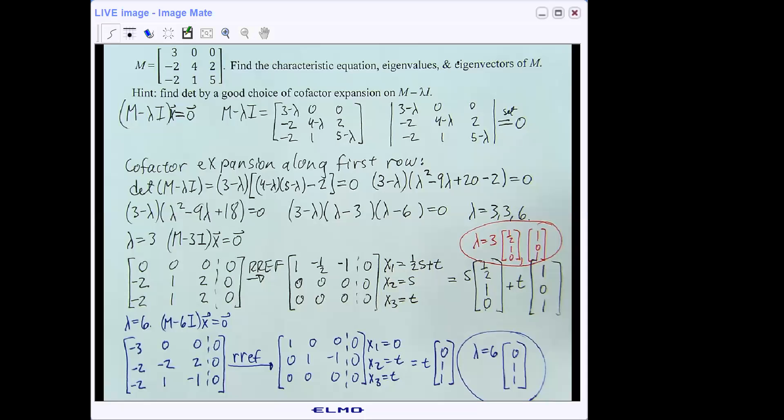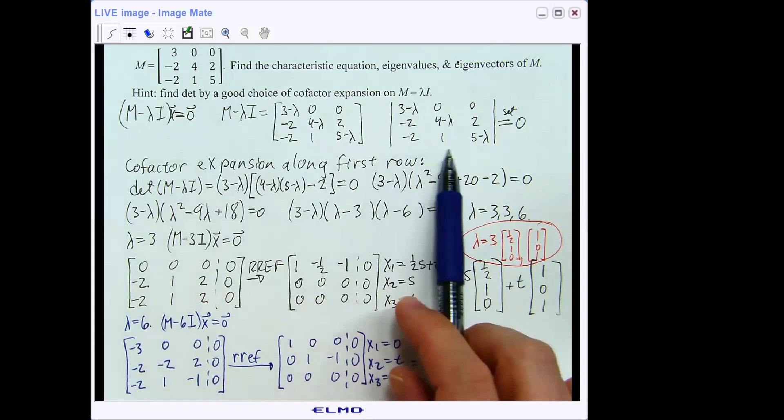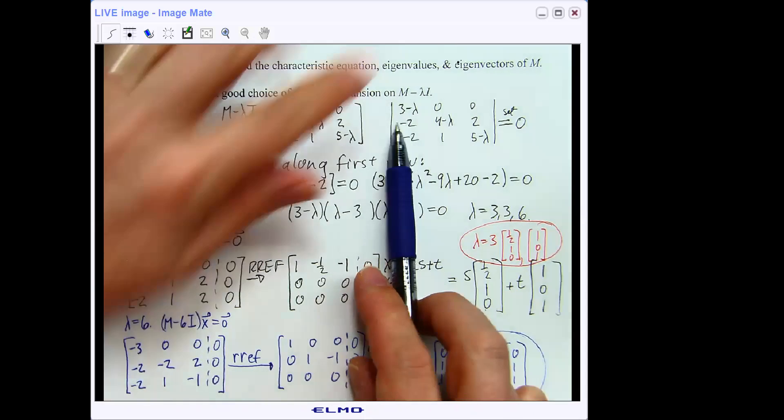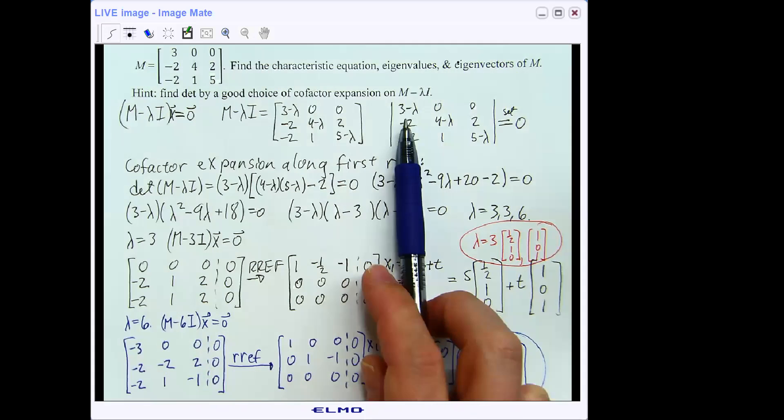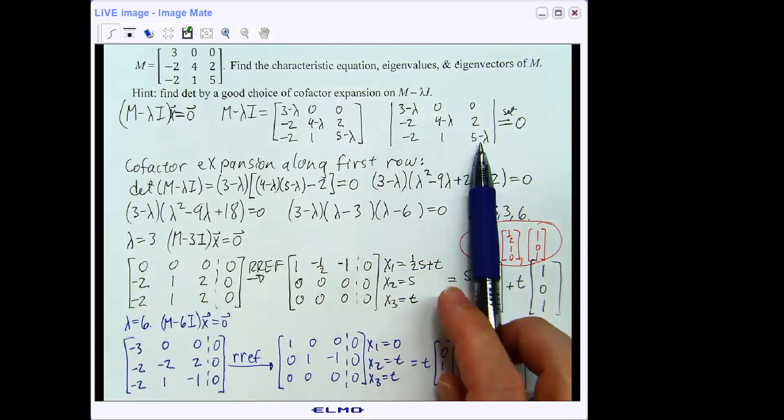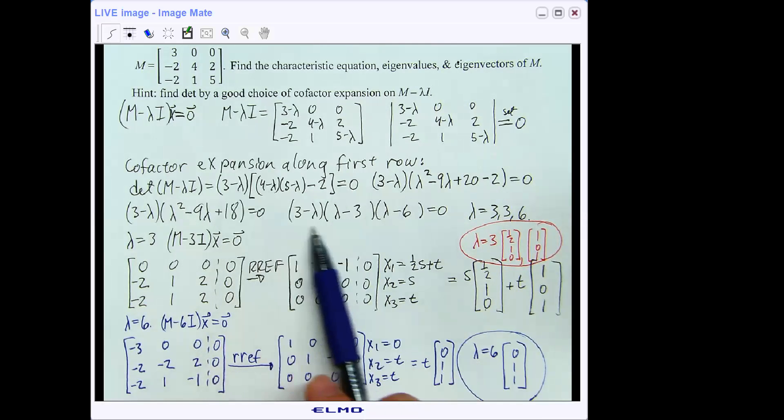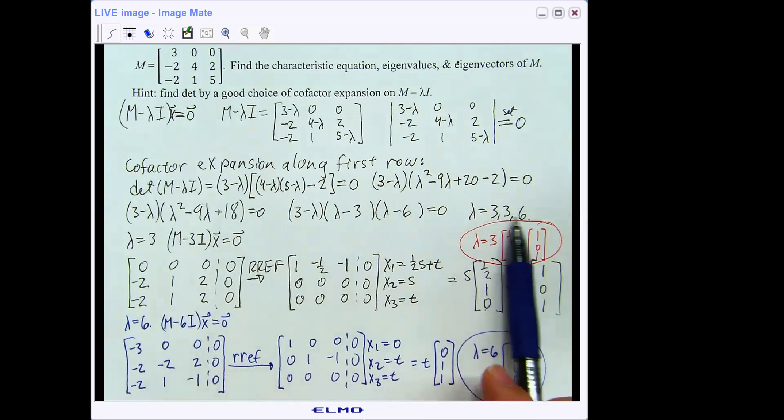Welcome back. Now that you've had a chance to work him through on your own, I'll step through my work. So I did M minus lambda I, took the determinant, did a cofactor expansion along the first row, since that's going to be a whole lot of zeros. So I only have to really do work on one term. So we'll have (3 minus lambda) times [(4 minus lambda)(5 minus lambda) minus 2]. And a little bit of algebra tells me that my eigenvalues are going to be 3, 3, and 6. So the eigenvalue of 3 was repeated.